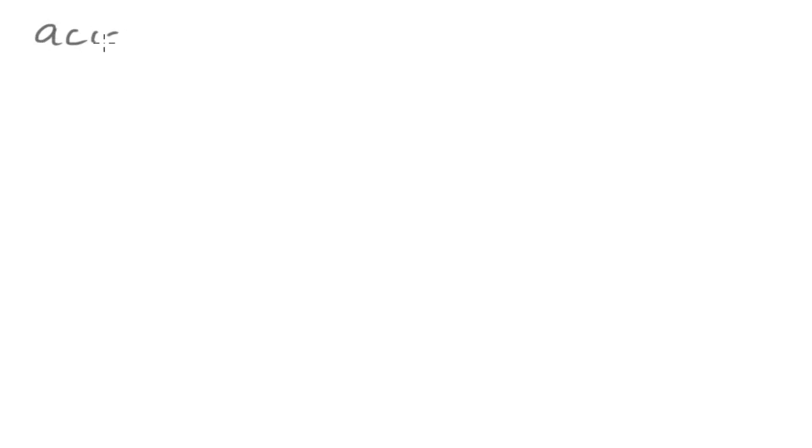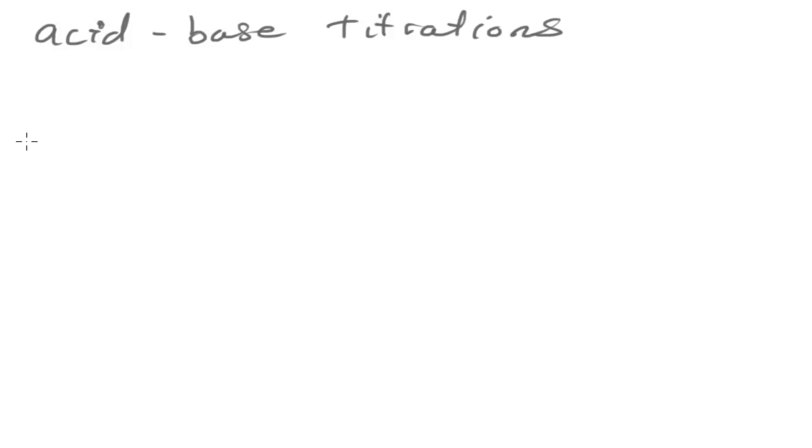What we're doing with this volumetric analysis is trying to find out some unknown thing about that second solution, using the known properties of the first solution and the few known things about the second solution. Volumetric analysis as it relates to titrations: there's a special kind of volumetric analysis which we call acid-base titrations.